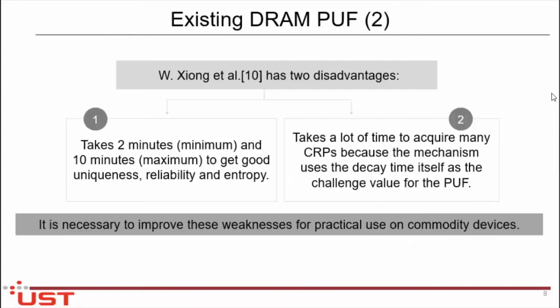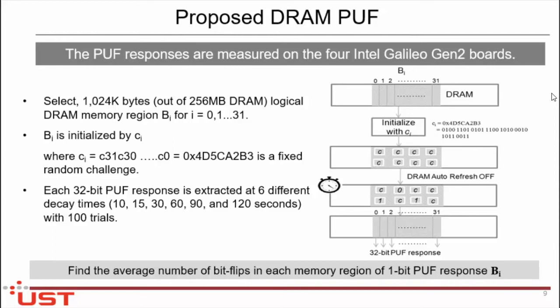To overcome these disadvantages, we proposed our work. Our process is the same, but there is one difference in the input challenge. In the WZ YONG team, she took input as a delay in seconds. In our work, we took a fixed random challenge for extracting the DRAM PUF. As you can see in the figure, we fixed the memory region, initialized it with a fixed random challenge in 32-bit memory sections, then turned the DRAM auto-refresh functionality off, same as the WZ YONG team. After that, we obtained some bit flip positions, with challenges transitioning from 1 to 0.